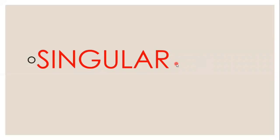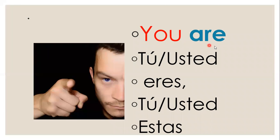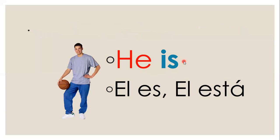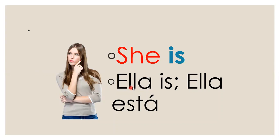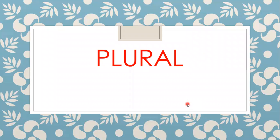Let's review. Singular: I am — yo soy, yo estoy. You are — tú eres, tú estás. He is — él es, él está. She is — ella es, ella está. It is — este es, este está, para referirme a animales o cosas en singular.